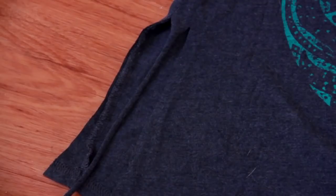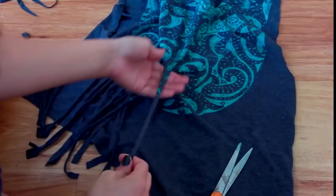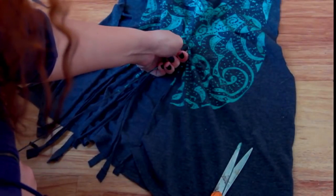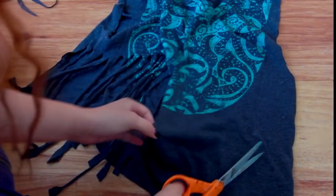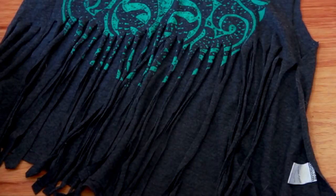After I cut my little strings, I pull on them, and like I did before with the previous shirt, it just kind of gathers it together so it doesn't look so freshly cut. This is what they look like when I'm finished with the front.